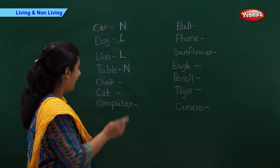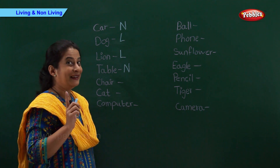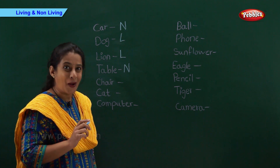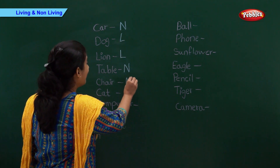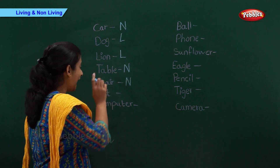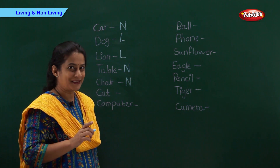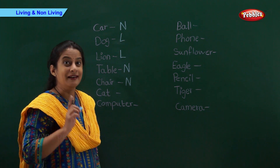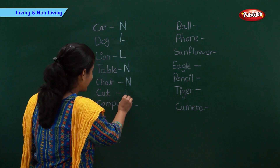Now we have chair. Who will tell me? Right. Chair is a non-living thing. So let's write N. And now we have cat. Can a cat breathe? Right. A cat is a living thing.